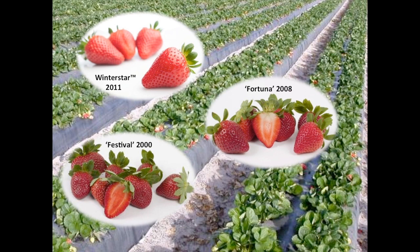We want to use marker-assisted selection to make our program more efficient. We have many traits in strawberry that are important for breeding and genomic applications: a number of different fruit traits including appearance traits, fruit chemistry traits, flavor traits, and physical traits like fruit size, firmness, and shelf life. We also have agronomic traits of yield and yield distribution, plant architecture, and disease resistance traits. Any impact that we can make to enrich our breeding populations for certain traits is a big help.